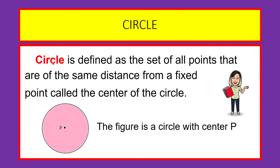A circle is defined as a set of all points that are of the same distance from a fixed point called the center of the circle. We have circle P.